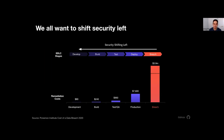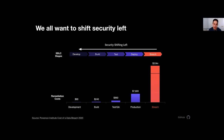The state of application security today. We all want to shift security left — it makes sense. If you find a vulnerability further on in the lifecycle, it's going to cost exponentially more than if you found it earlier. If you find an issue in development, very cheap to fix: $80. You find an issue in production, much more expensive: $7,600. And you never want to get to a breach — that's $4 million. But the interesting thing is we've been talking about shifting left for at least a decade.